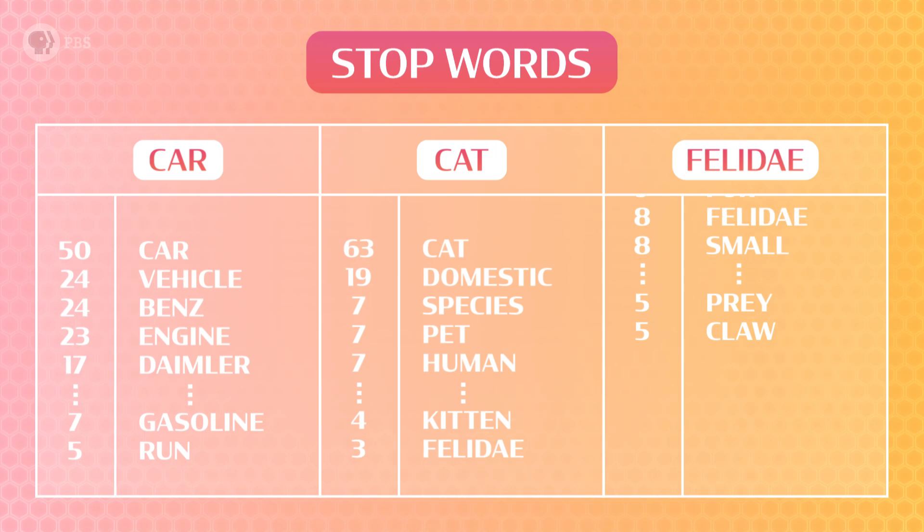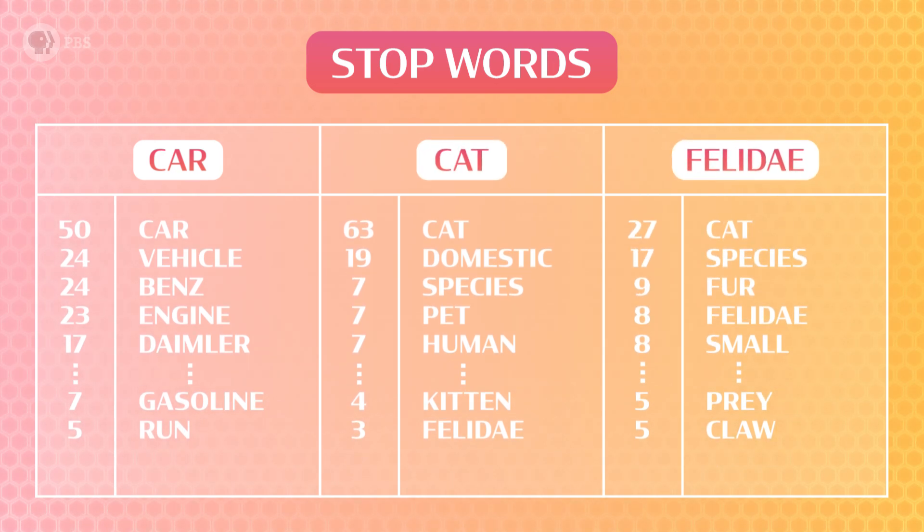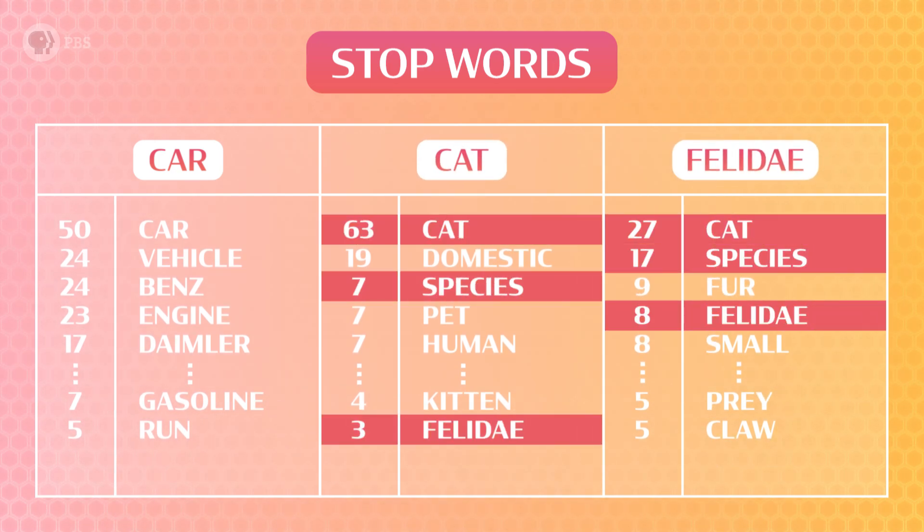Let's try it again. Based on this, it looks like cat and felidi mean almost the same thing, because they both show up with lots of the same words in their Wikipedia articles, and neither of them mean the same thing as car. But this is also a really simplified example. One of the problems with count vectors is that we have to store a lot of data. To compare a bunch of words using count vectors like this, we'd need a massive list of every word we've ever seen in the same sentence, and that's unmanageable.